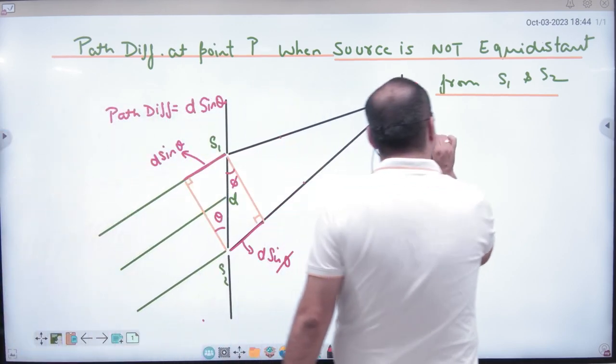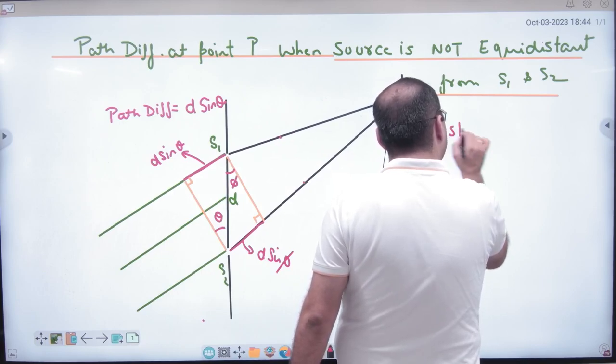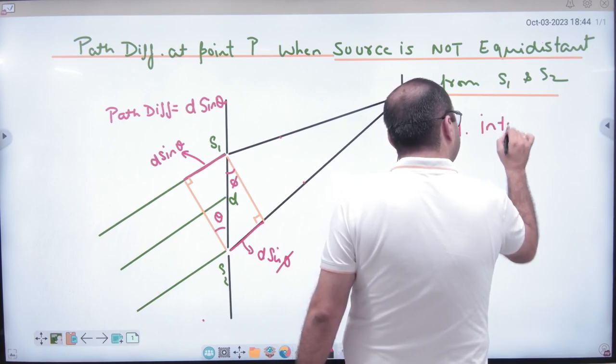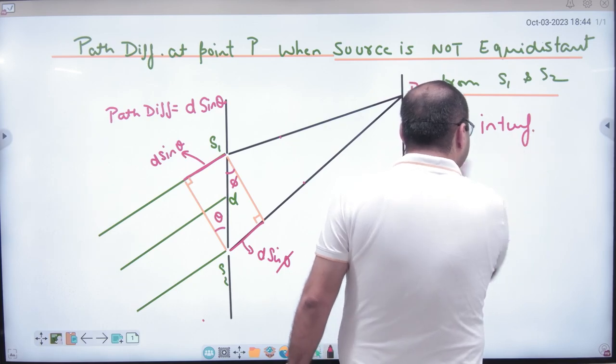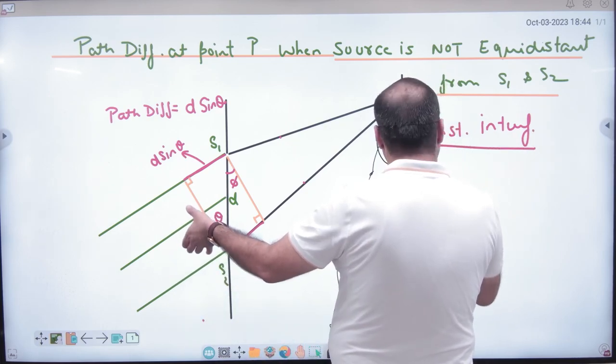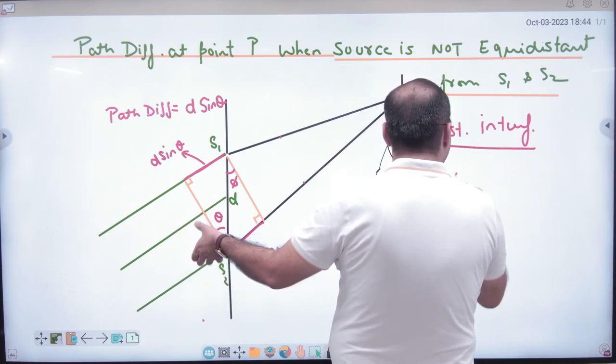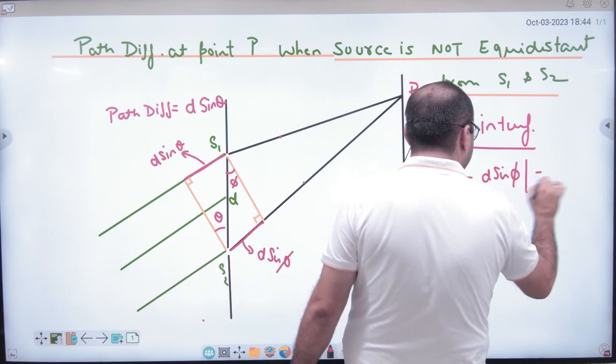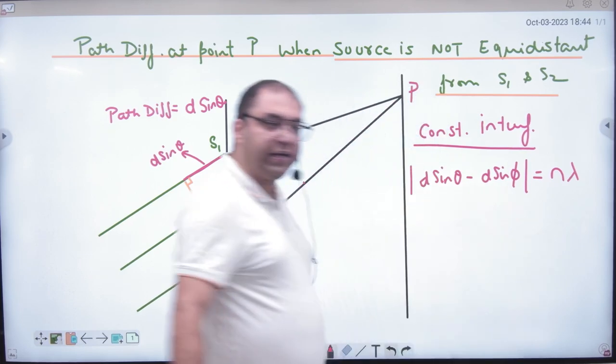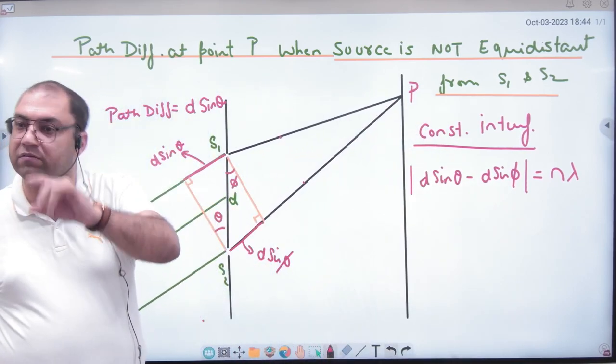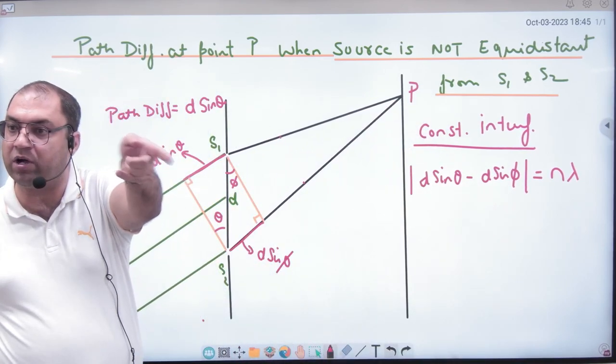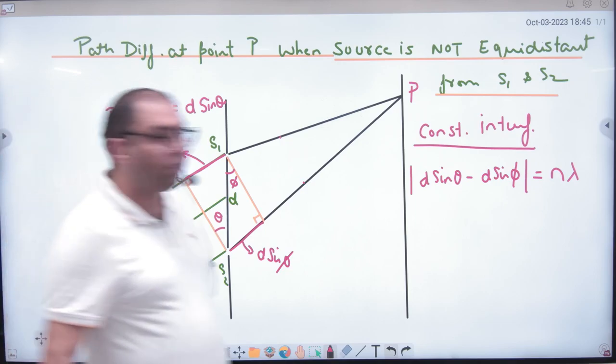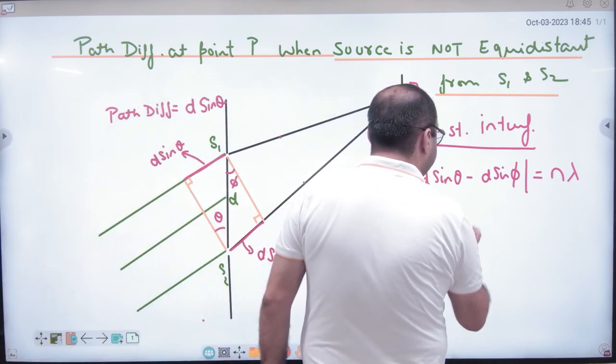So conditions, what will happen? So headings, constructive interference. In constructive interference, you have to take mod. Whatever the big value is, what do you want to do? Minus. So in constructive interference, if it is n lambda, then it is constructive interference.